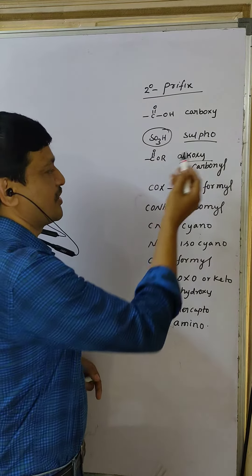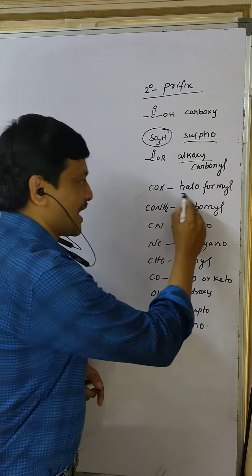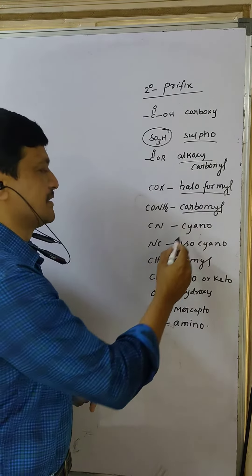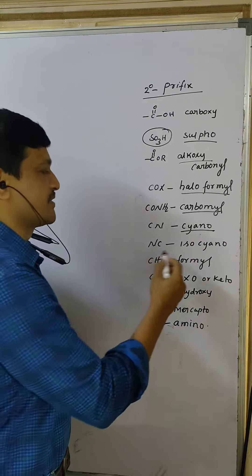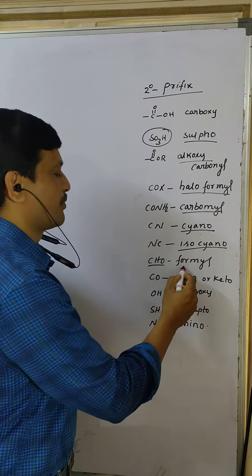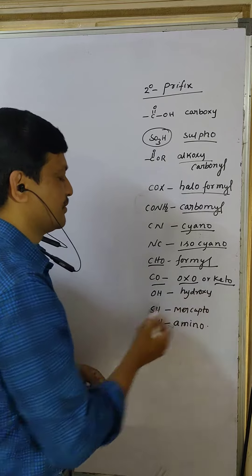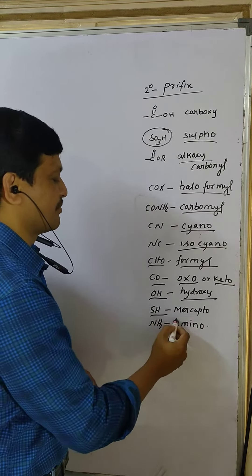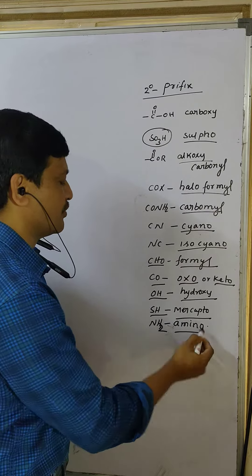The secondary prefix names are as follows: ester/alkoxycarbonyl, acid halide, acyl halide, amide/carbamoyl, cyanide, isocyanide, aldehyde/formyl, ketone — oxo or keto, OH — hydroxy, SH — mercapto, NH2 — amino.